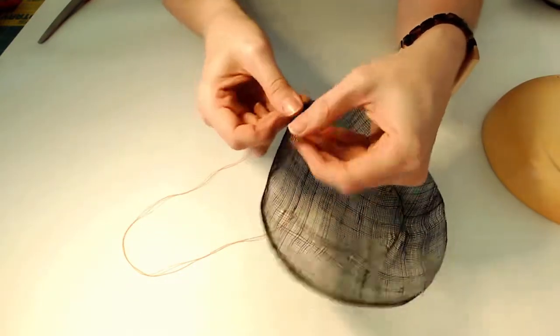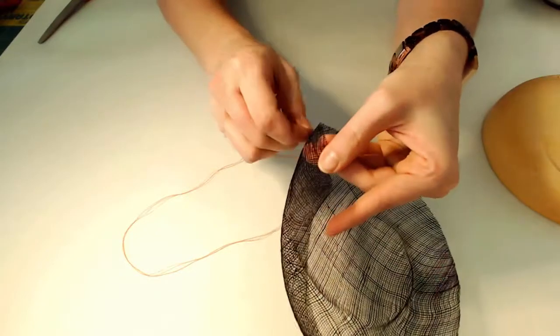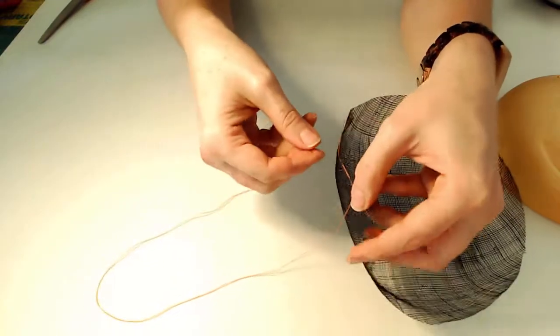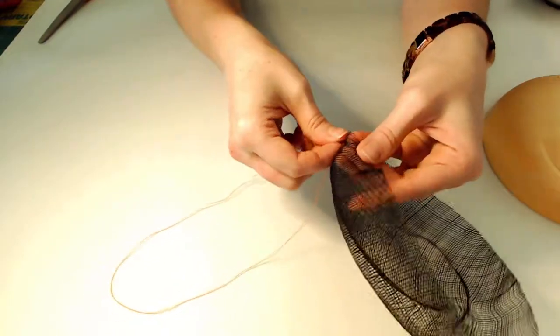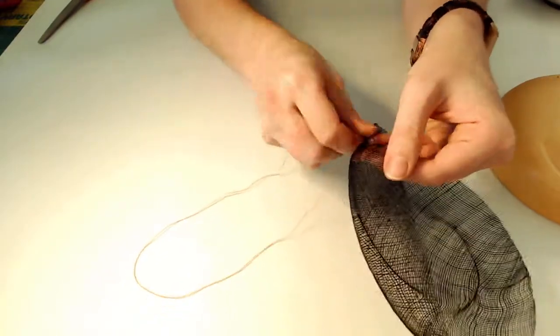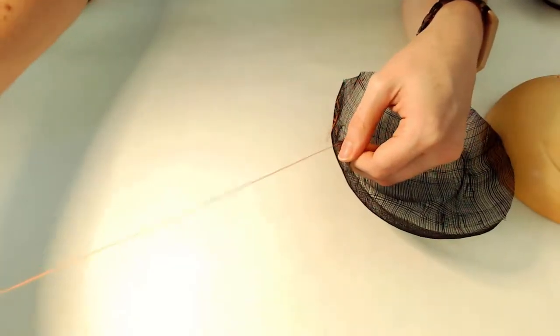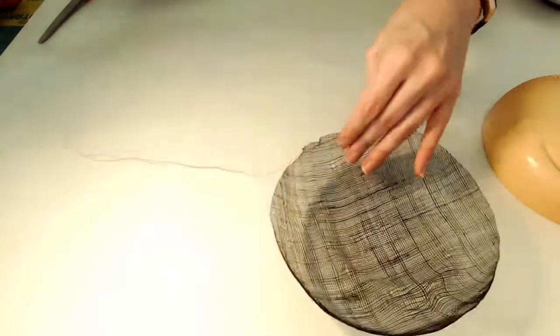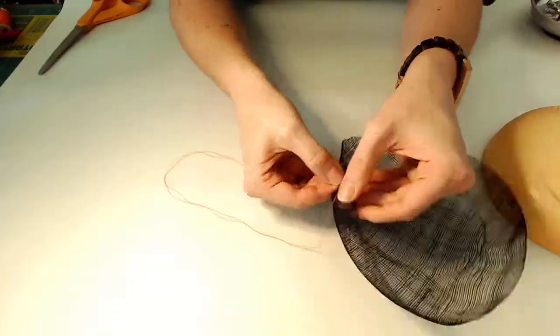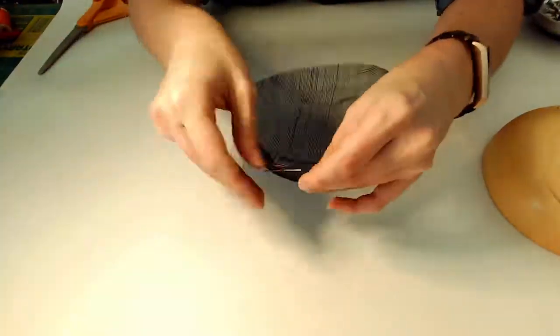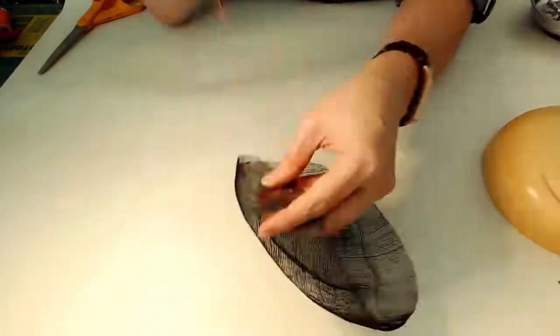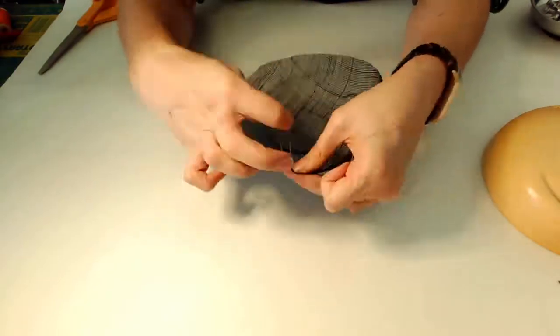So I'm just going to keep weaving the needle in and out of the hat. Just gently pull it. And this is a running stitch or basting stitch and this will help to keep that shape as you're sewing. And it should be done pretty quickly. You don't need to take a lot of time.